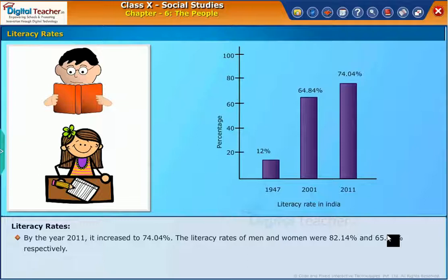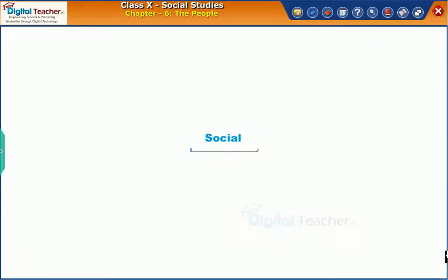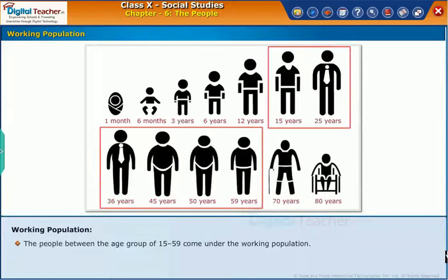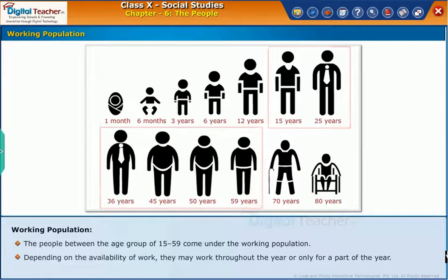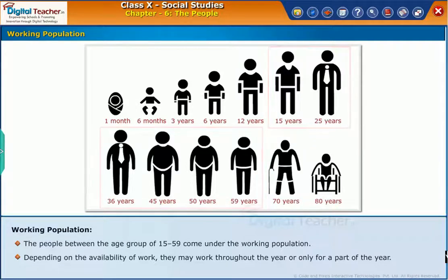Let us look at the next information of population census, the working population in detail. The people between the age group of 15 to 59 come under the working population. Depending on the availability of work, they may work throughout the year or only for a part of the year.